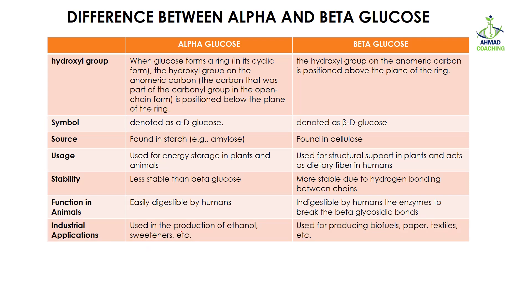Alpha glucose is used in the production of ethanol and sweeteners, while beta glucose is used in biofuels, paper, and textile industries. This is how beta glucose differs from alpha glucose — because of this difference, their structure, properties, and usage are also different. If you have any questions related to this topic, please let me know in the comment section. If you like this video, share it with your friends, and let me know if there is any other topic you want to learn about.